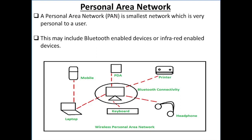Next we have Personal Area Network. A Personal Area Network is the smallest network, which is very personal to a user, created for personal use. This may include Bluetooth-enabled devices and infrared-enabled devices.